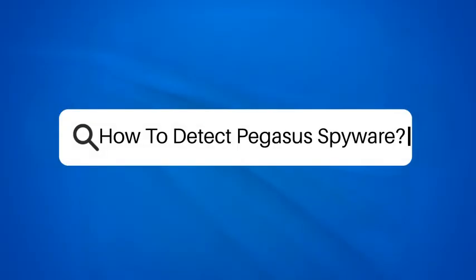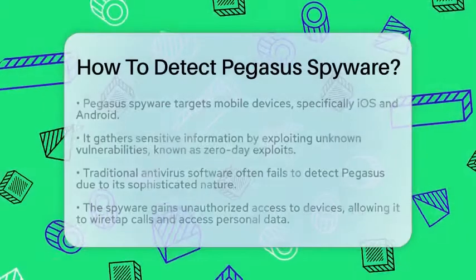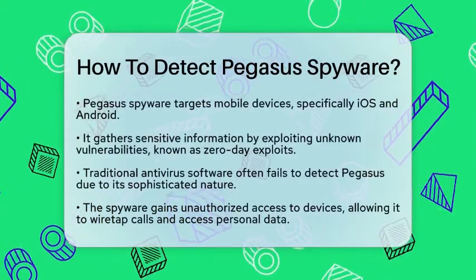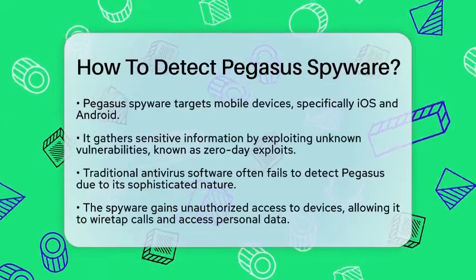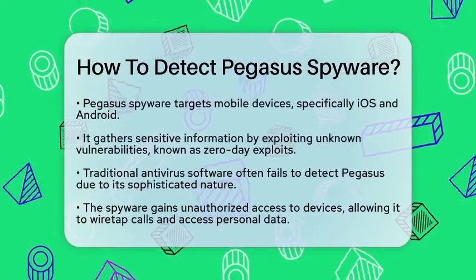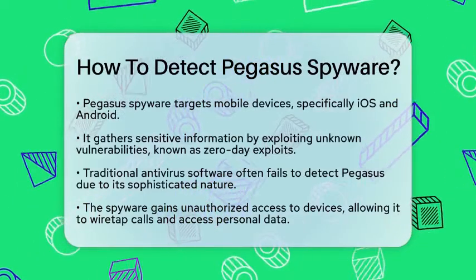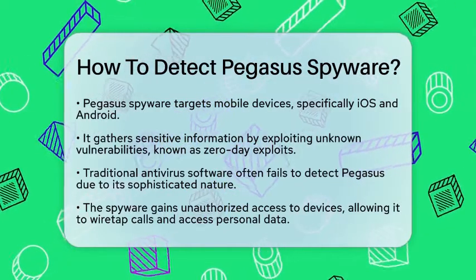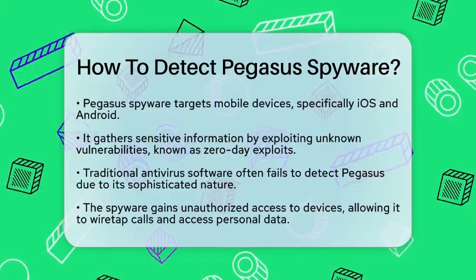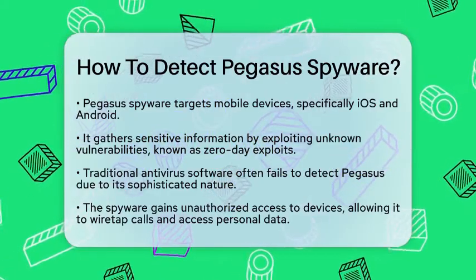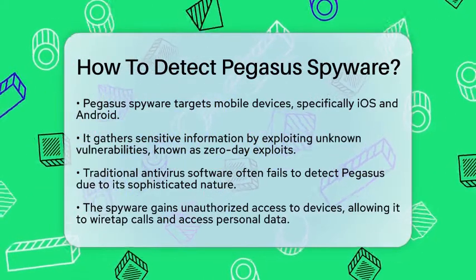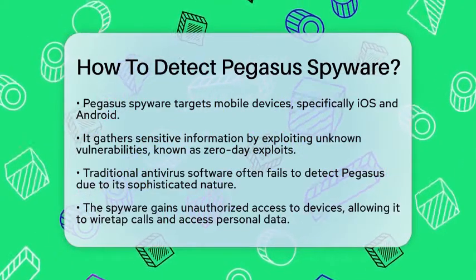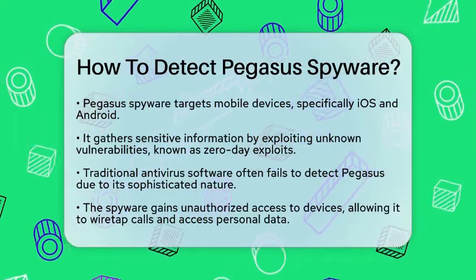How to Detect Pegasus Spyware. Have you ever wondered how to spot a hidden threat lurking in your mobile device? Today, we will discuss the methods to detect Pegasus spyware, a sophisticated tool used in modern cyber warfare. Pegasus spyware targets mobile devices, primarily those running iOS and Android operating systems. It is designed to gather sensitive information by exploiting unknown vulnerabilities, often called zero-day exploits.